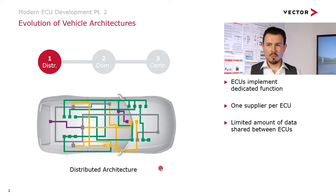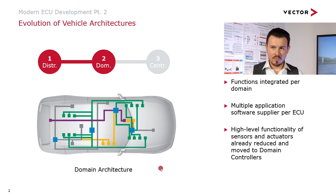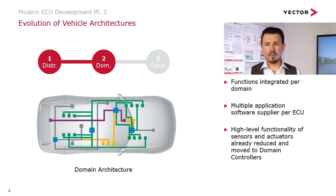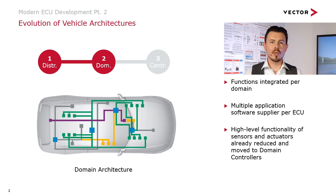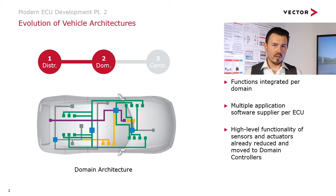Based on these drawbacks, the second type of architecture — the so-called domain architectures — was developed. Here you see these large blue ECUs. On these domain ECUs, the goal was to put all the software together for one specific domain, hence the name. For the first time, software from multiple suppliers was combined, sharing the same set of sensors and actuators. This is a great step in the right direction, enabling reuse and more off-the-shelf components.